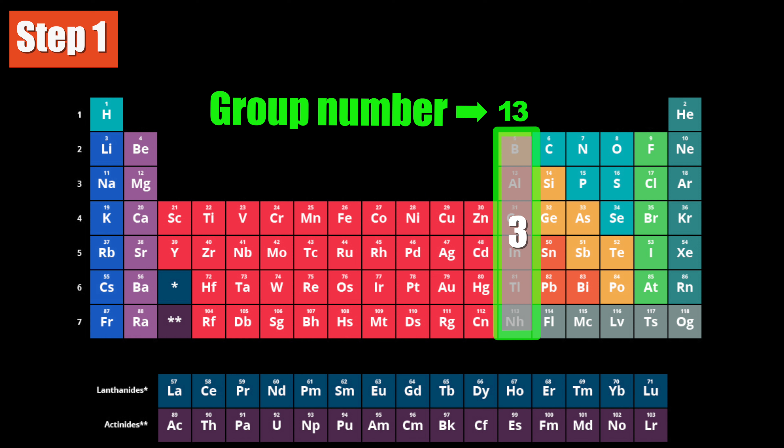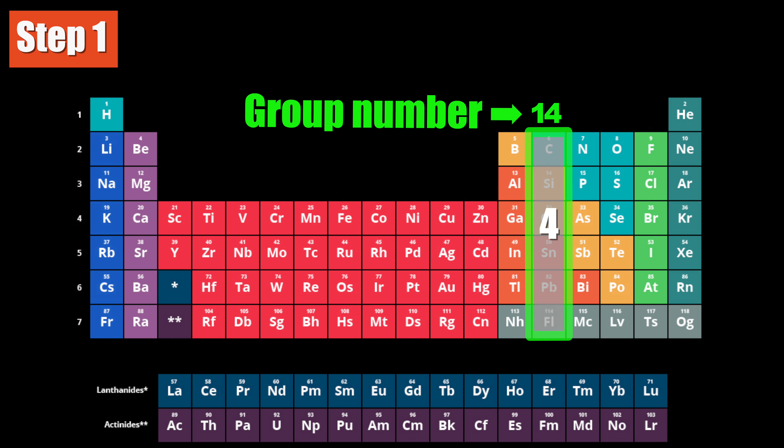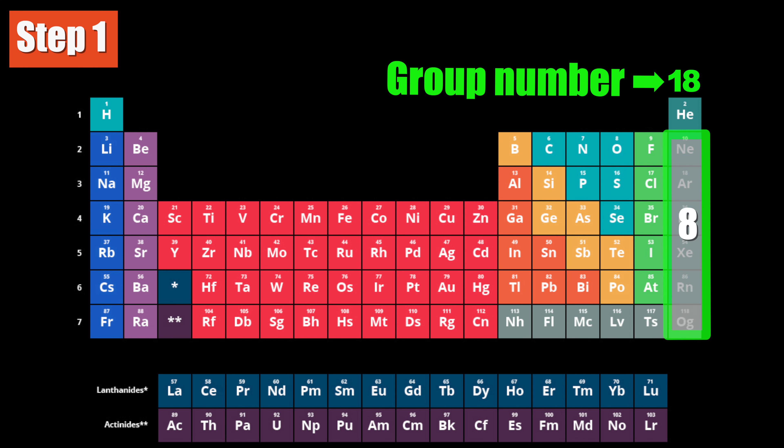Group 13 has 3 valence electrons. Group 14 has 4 valence electrons — well, you get the idea. Finally, group 18 will have 8 valence electrons, satisfying the octet rule.